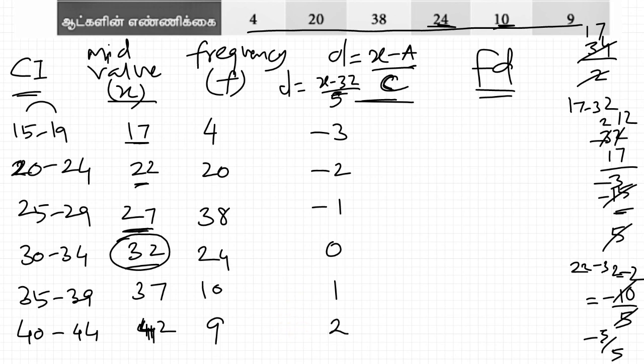Now f into d. Frequency times d: 4 into minus 3 is minus 12. 20 into minus 2 is minus 40. 38 into minus 1 is minus 38. 24 into 0 is 0. 10 into 1 is 10. 9 into 2 is 18.